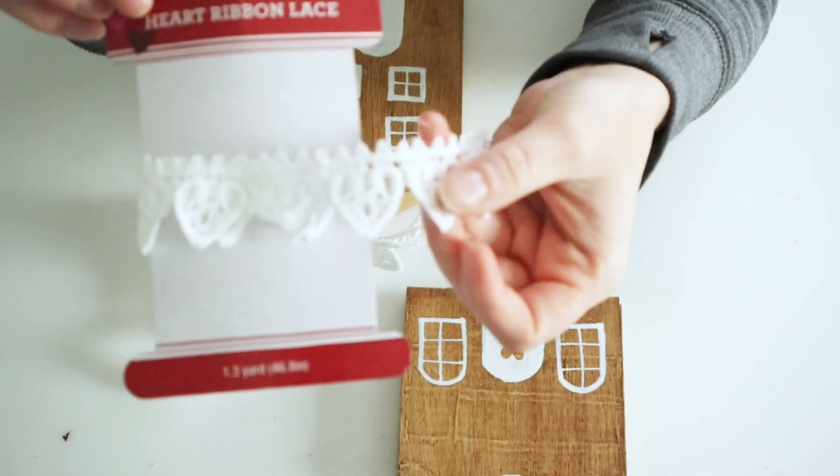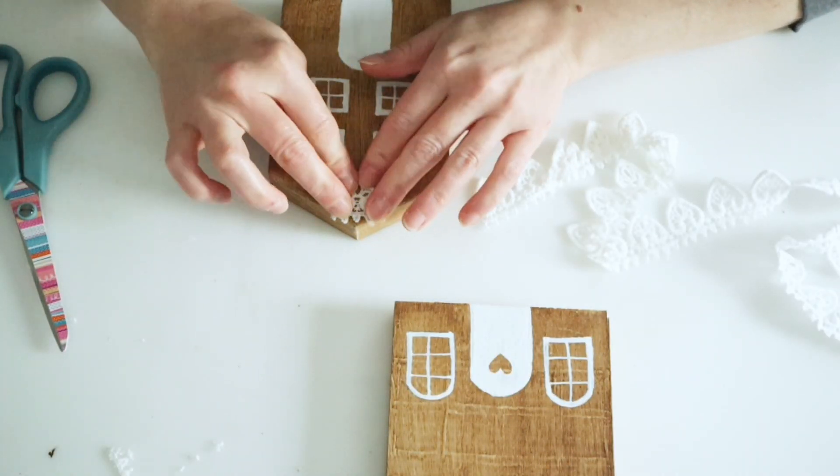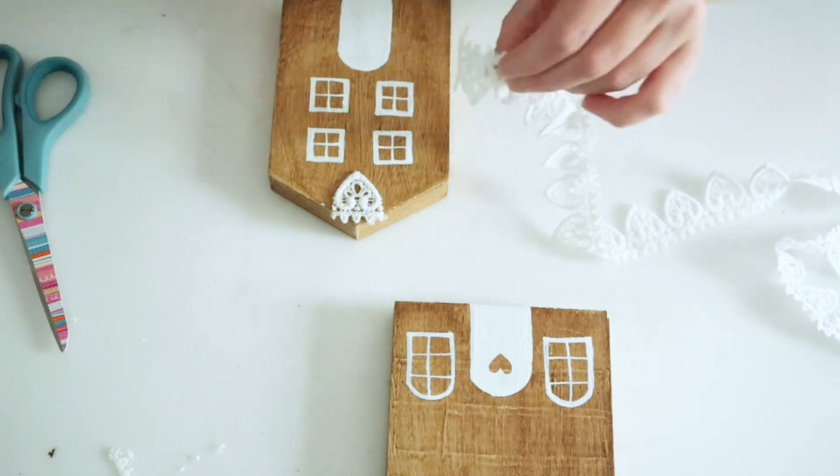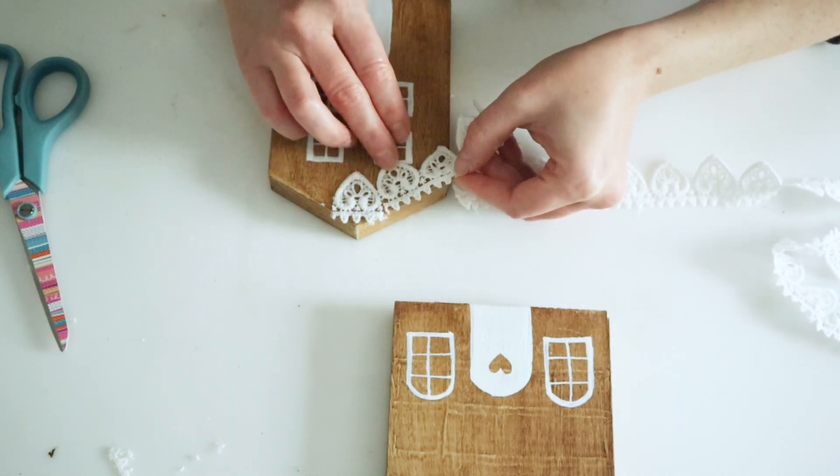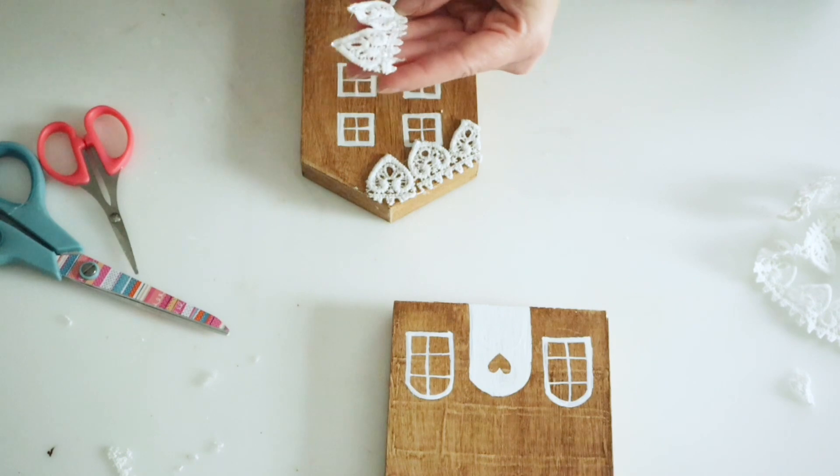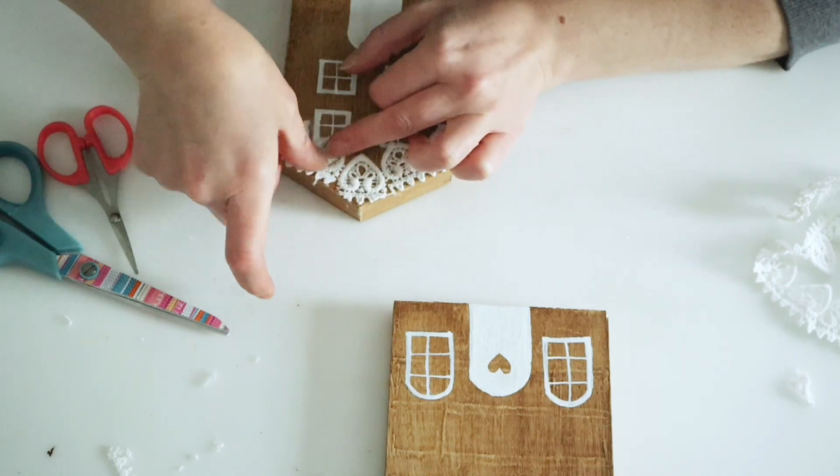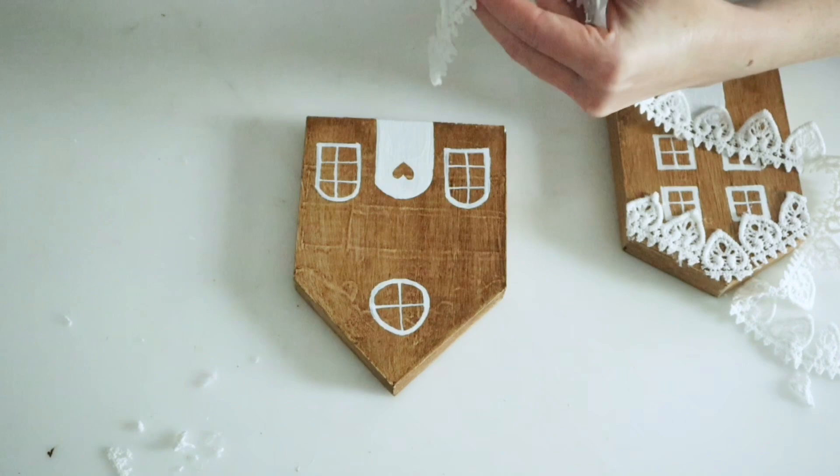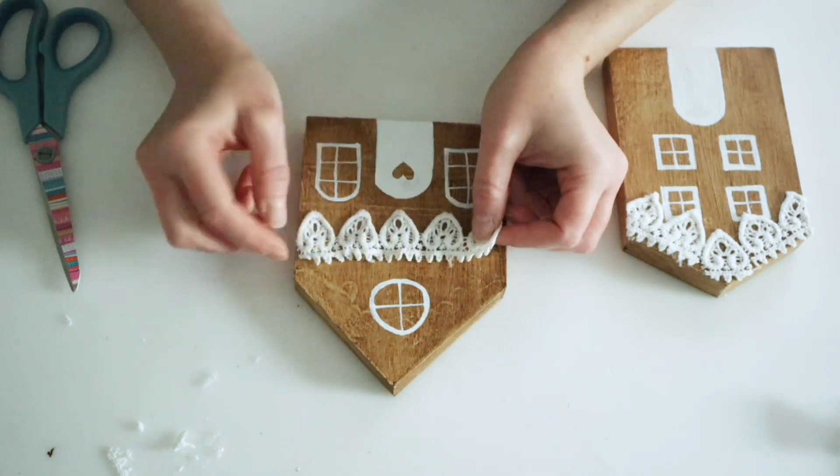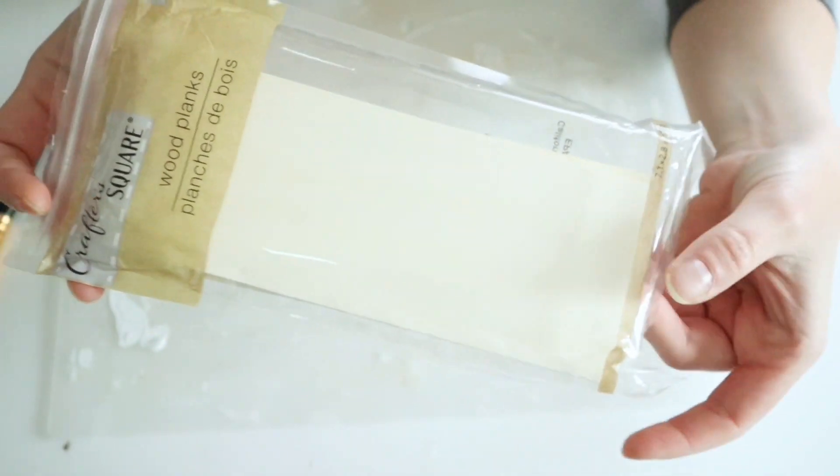Then I decided to dress this up. I had this heart ribbon from Dollar Tree from I think Valentine's Day and so I cut down one of the little hearts and put it in the center and then I just added the rest down the sides of the roof line. Don't worry if it covers the top because we're actually going to be making roofs for these but I went ahead and hot glued that onto there and then for the smaller one I actually just cut a piece of that same heart ribbon and glued it across the center where it had that open space.